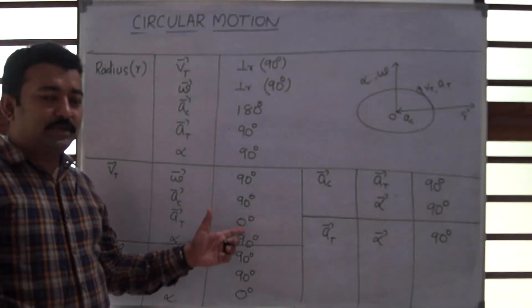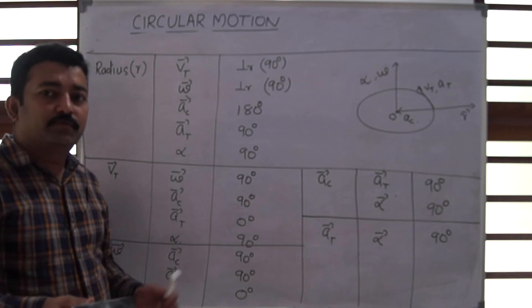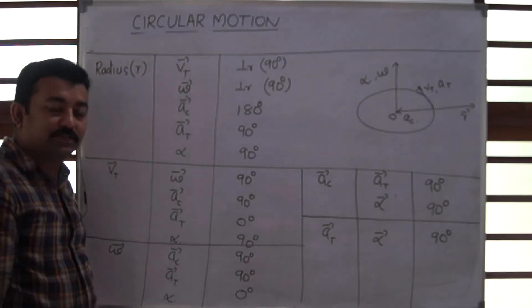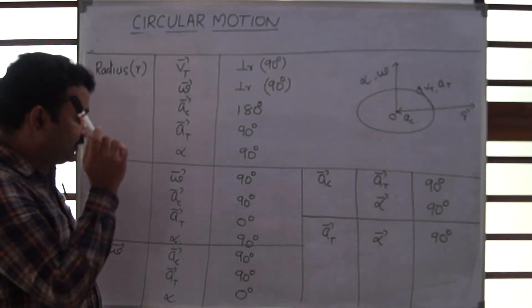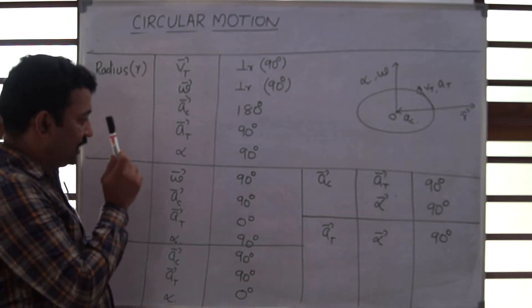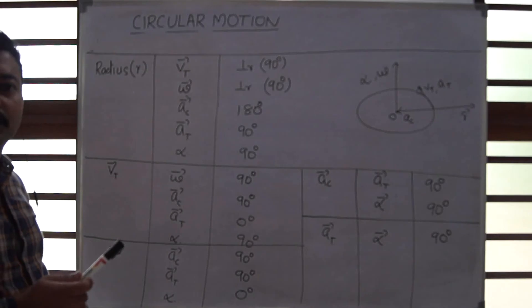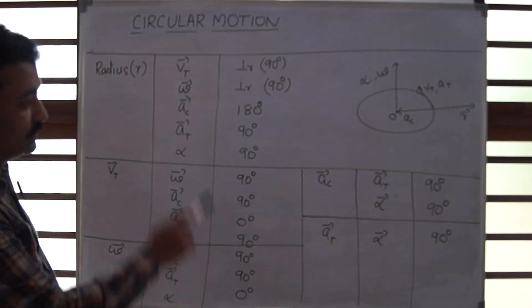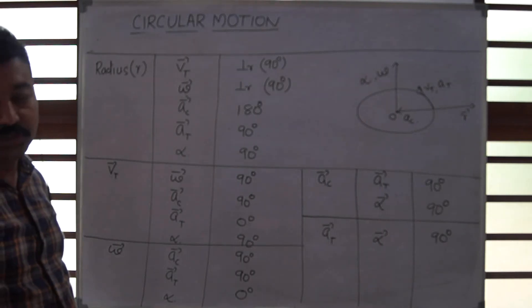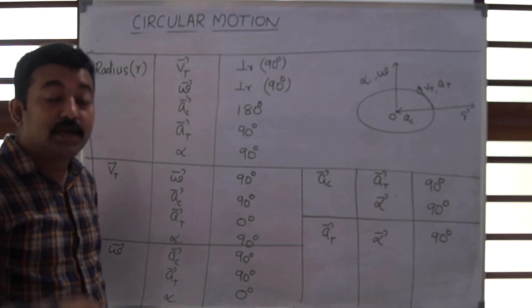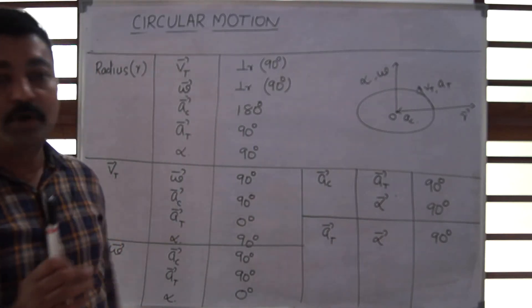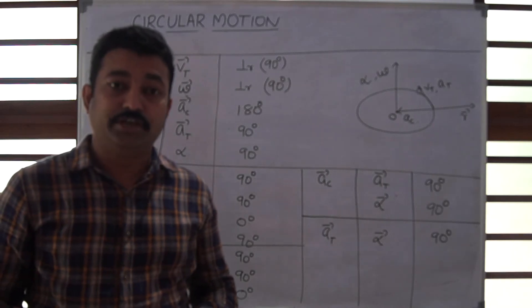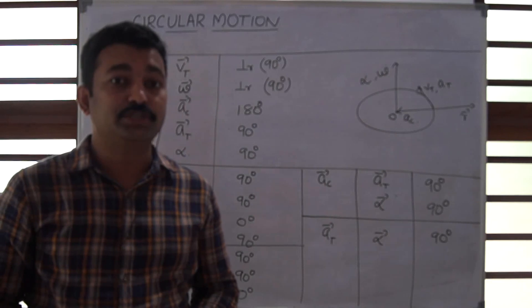If you learn this table, you can answer any question from competitive exams asking for the angle between quantities like tangential velocity and centripetal acceleration, or angular acceleration and angular velocity. There are fourteen relations in total that we have studied. This covers everything about uniform and non-uniform circular motion. Thank you all for watching this session with us — we hope to see you in more sessions in the coming classes.